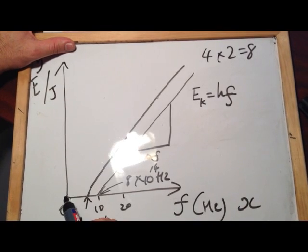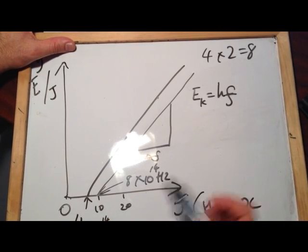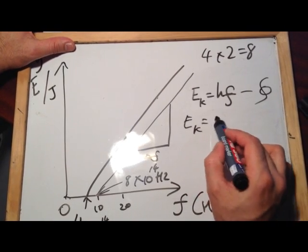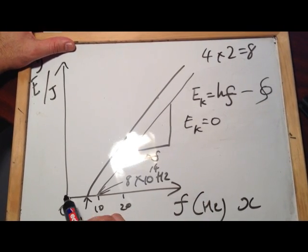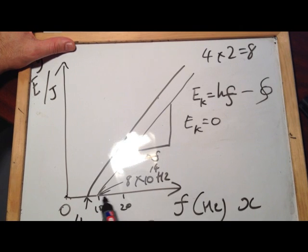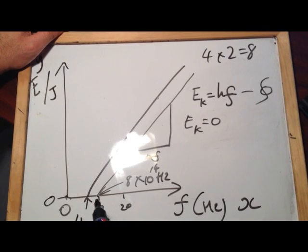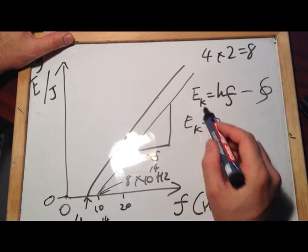when energy equals 0, so if we just rewrite this here, if I say Ek, the kinetic energy equals 0, which is what it equals when we intercept the x-axis, you can see at this point, energy is 0, this is 0 kinetic energy. So if Ek is 0,